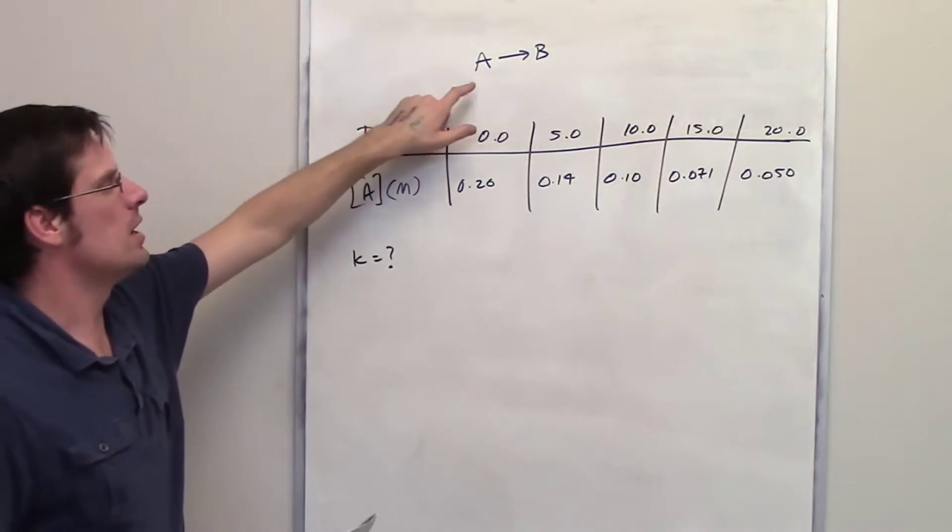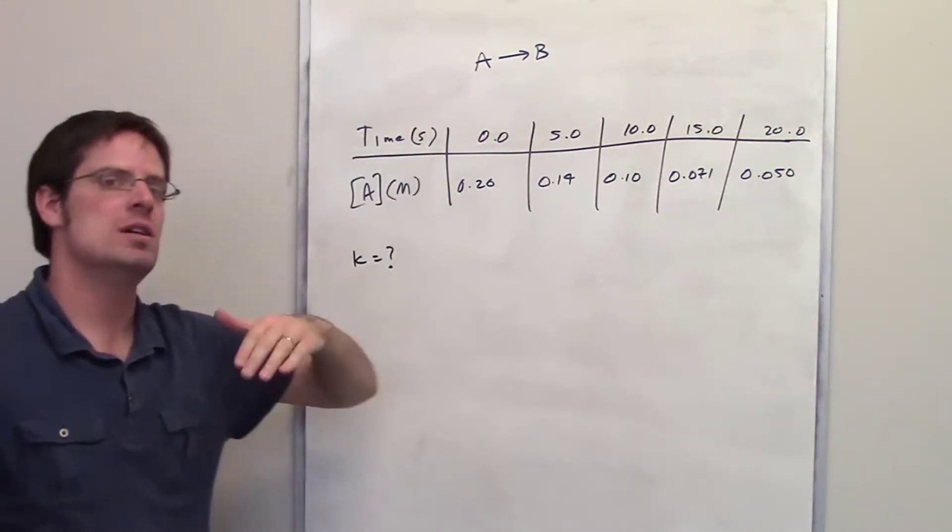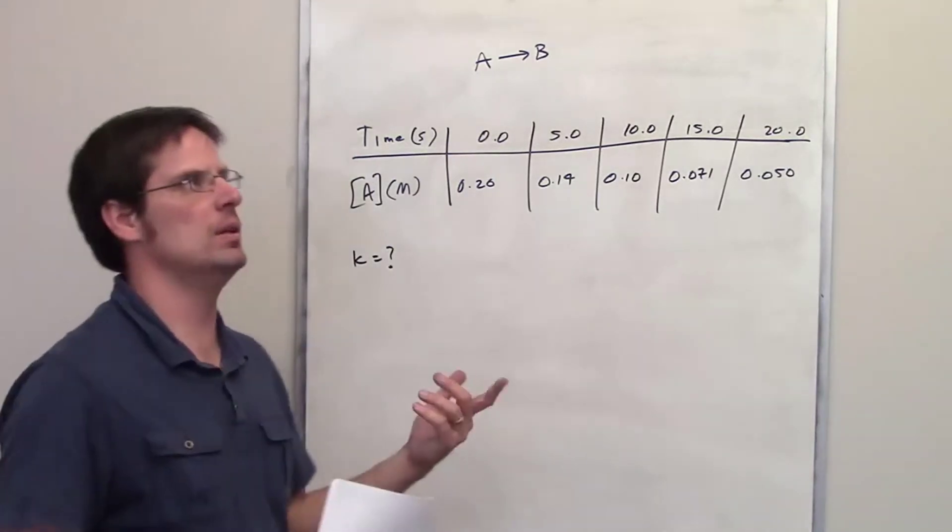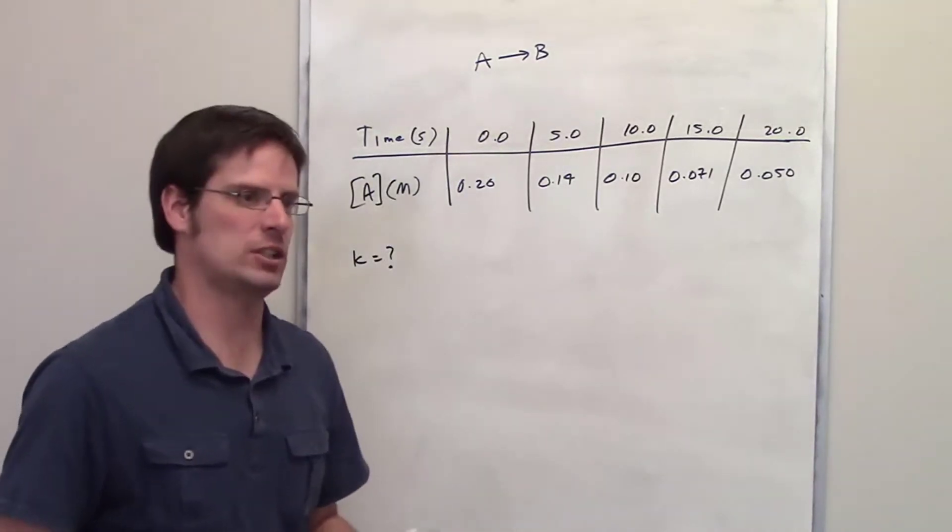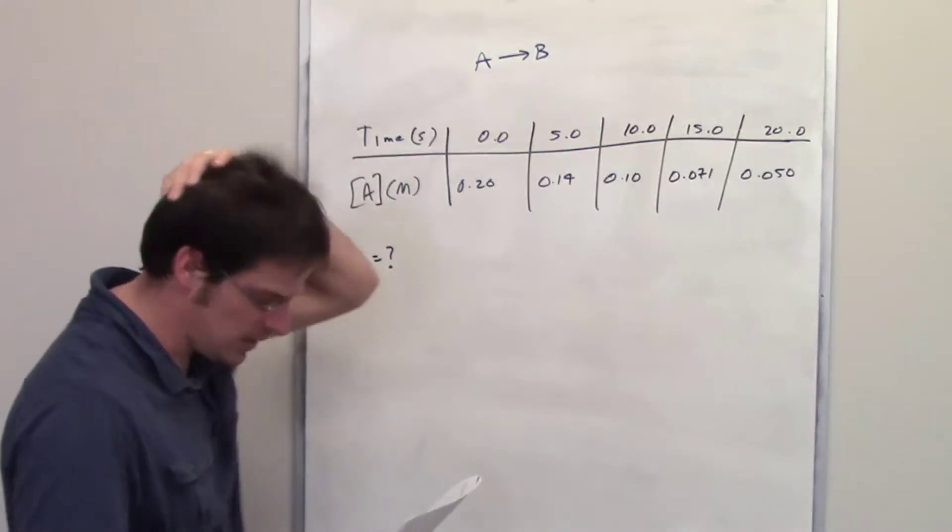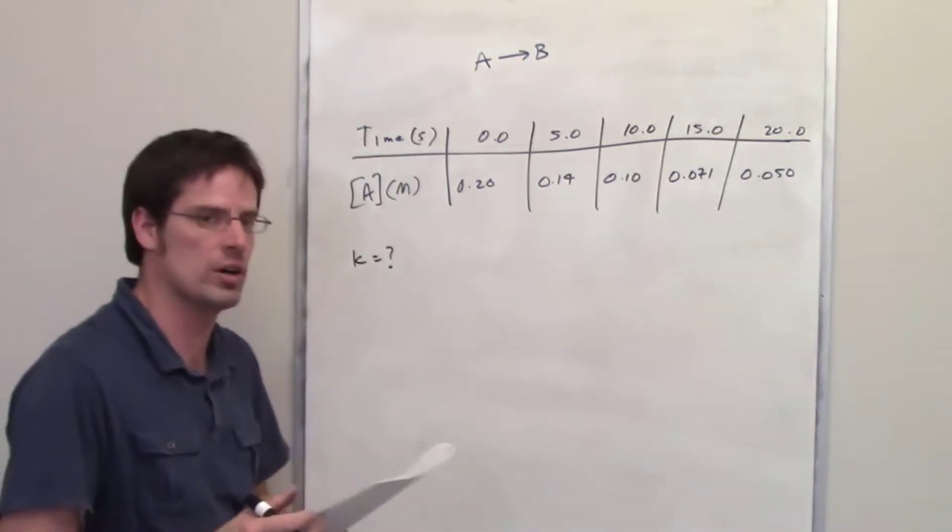If it were third order with respect to A, it means that if you doubled the concentration of A, it would eight-tuple the rate of the reaction. Anyway, that kind of thing totally can happen, but that is not what's going on here. It tells us straight up that it's a first order reaction.